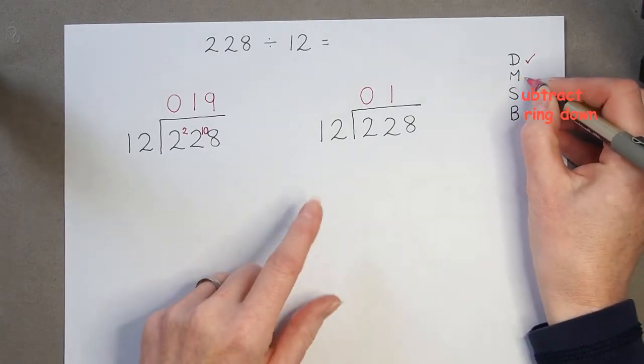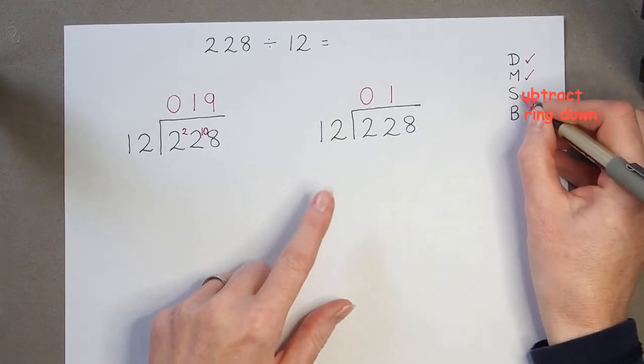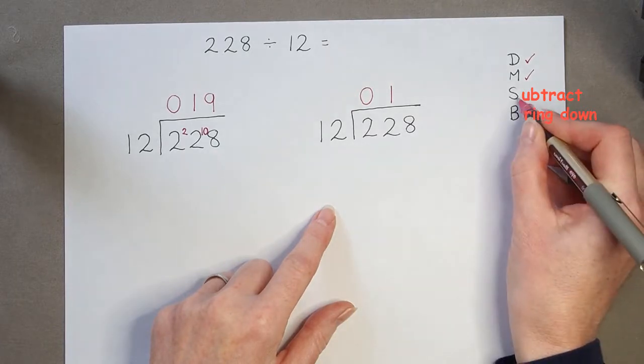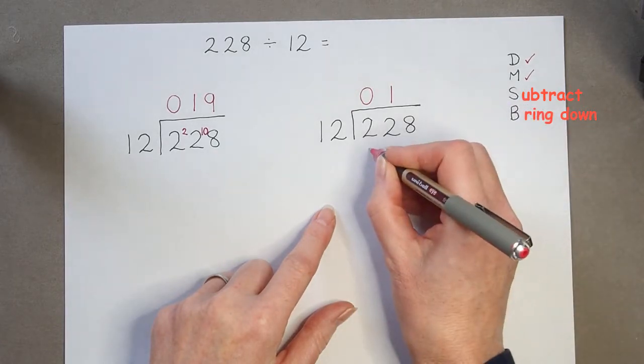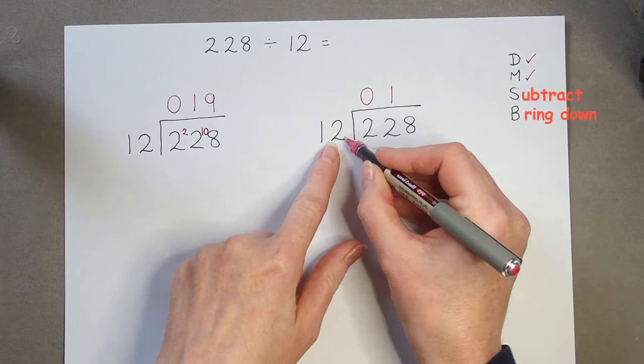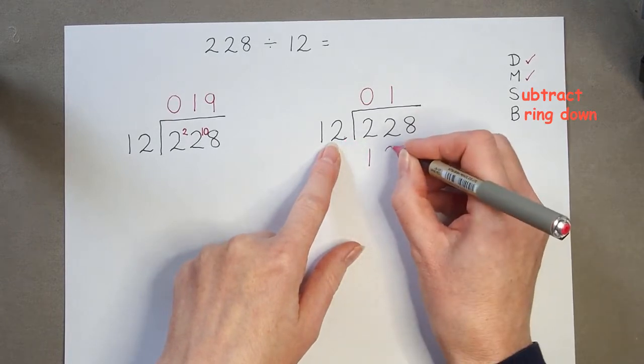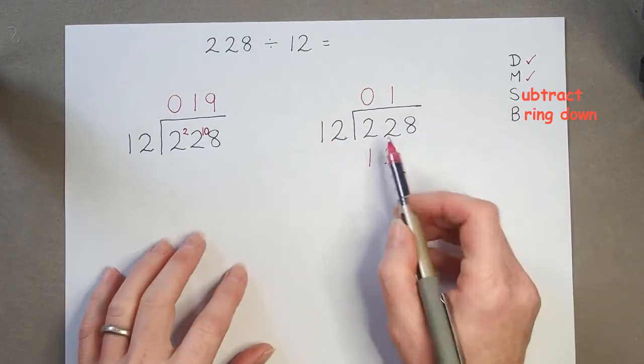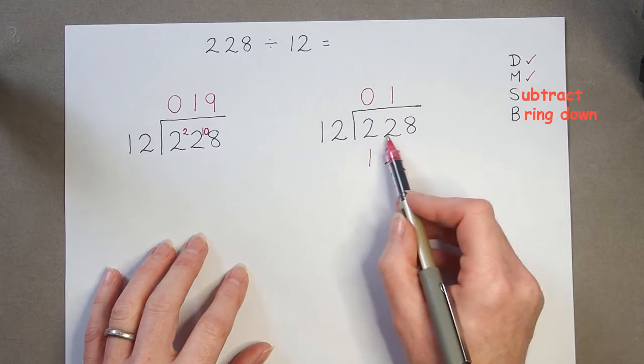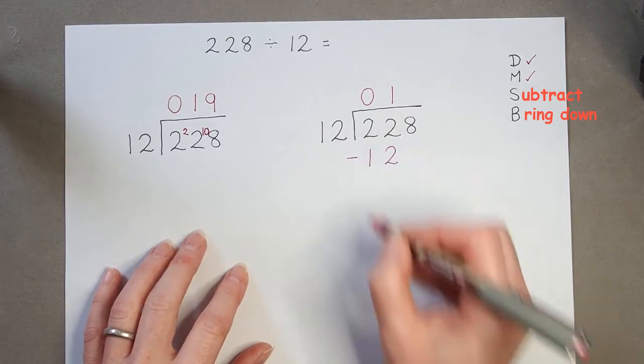The S is for subtract. So, I'm going to take that 12. 1 times 12 is 12. And I'm going to write it underneath here, the 22, and subtract.